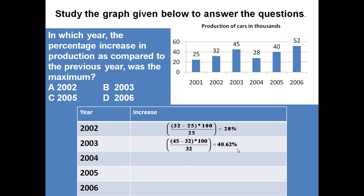In 2004 production decreased from 45 to 28, so here decrease in production is there so no need to determine. In 2005 again it was increased from 28 to 40, so 40 minus 28 divided by 28 into 100 is equal to 42.85 percent. And in 2006 it was 52 minus 40 divided by 40 into 100, which is equal to 30 percent.